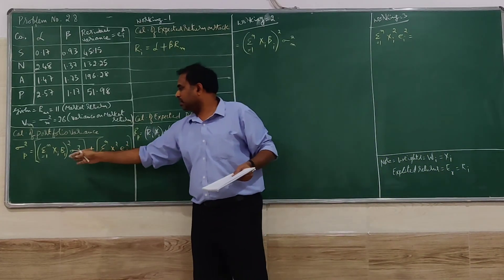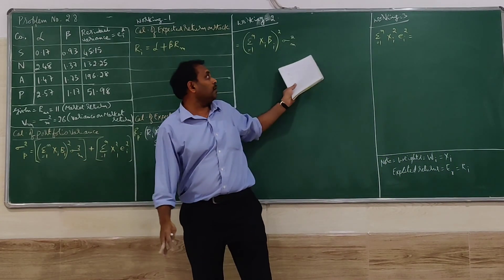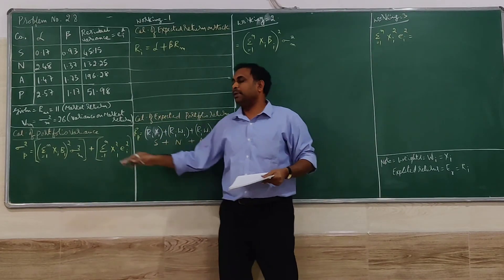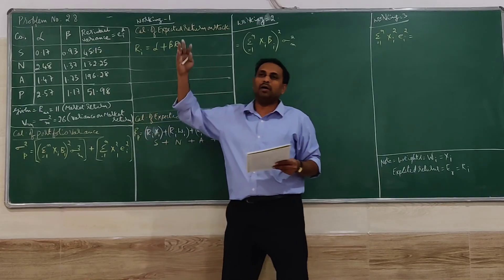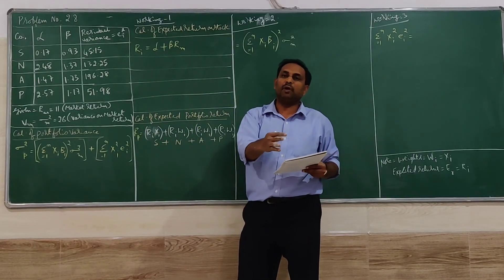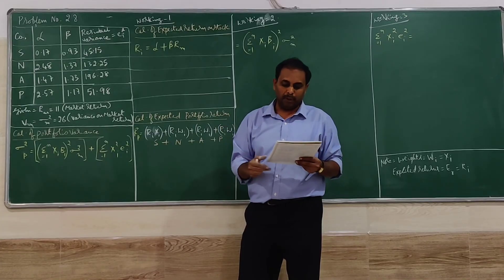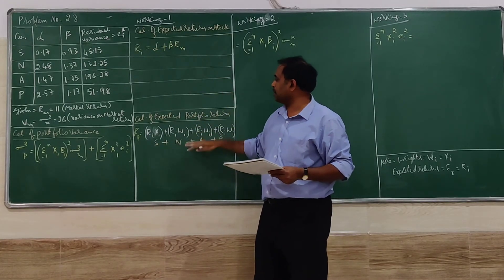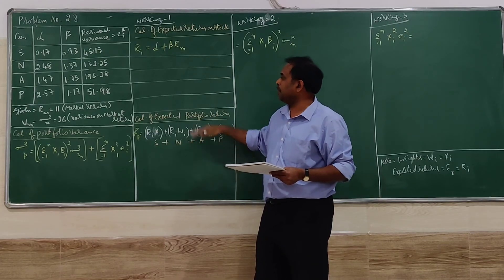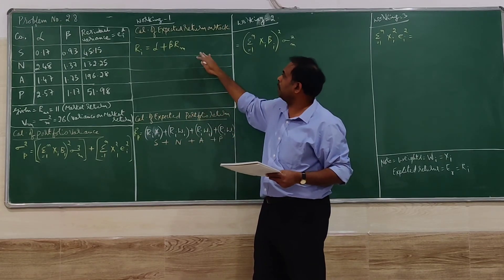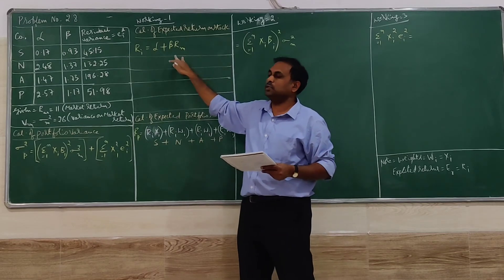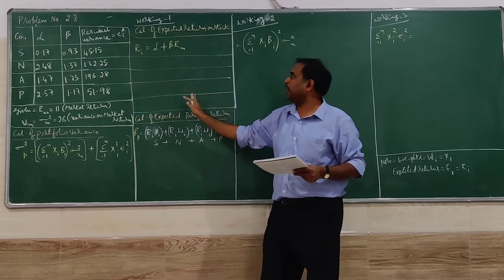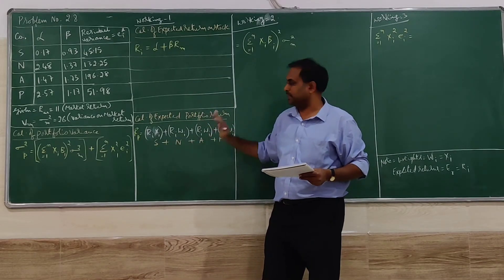I have simplified this into parts — first part and second part — so it becomes easier for working. If you try to work everything in one full length, it is going to create a problem. So I have simplified it. The formula for RI — the expected return on a stock — is alpha plus beta into RM. RI is not given, so we calculate it.